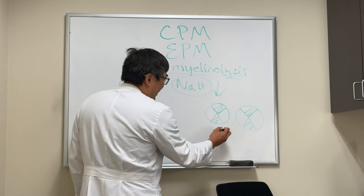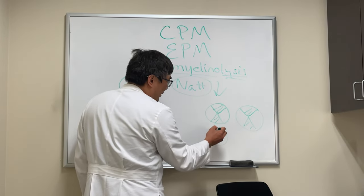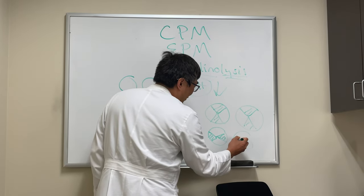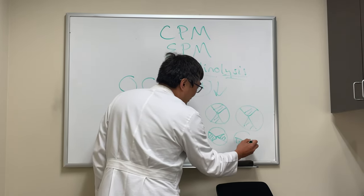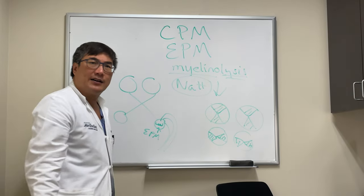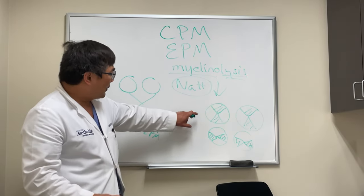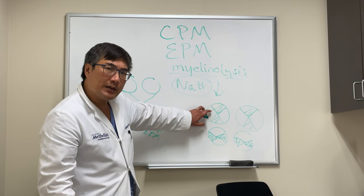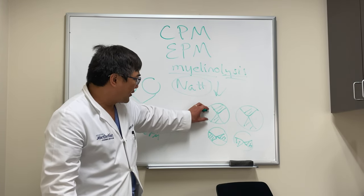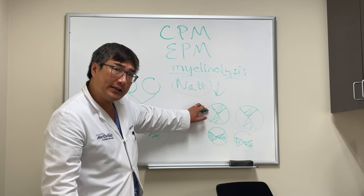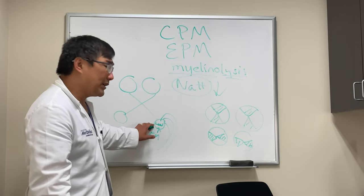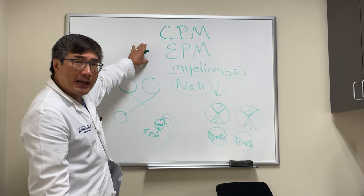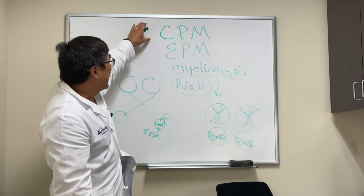Geniculate involvement can also appear as involvement or sparing of a central wedge, due to the anatomy of the geniculate body. This relates to the lateral choroidal artery versus the anterior choroidal artery supplying different parts of the geniculate body. So extra pontine myelinolysis is the afferent manifestation of myelinolysis.